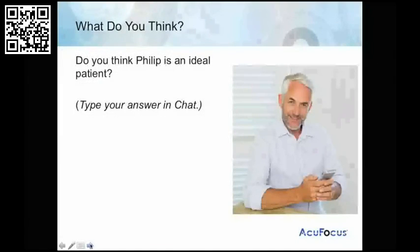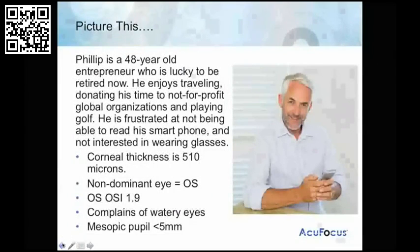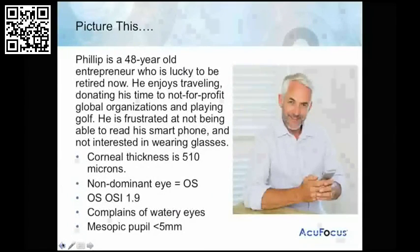The OSI — the objective scatter index from the AccuTarget HD — gives us a lot of information about the patient's quality of vision and clues as to whether this patient might be a good candidate or if there's something else we should look for. With an OSI of 1.9, you'd want to look at what's making his index that number. Ideally we like them under 1; 1.9 is not terrible but is borderline. You want to look for other pathologies such as cataracts, dry eye, especially with the history of watery eyes. Corneal thickness is perfectly normal, pupil size is normal as well, but you want to explore the OSI further.